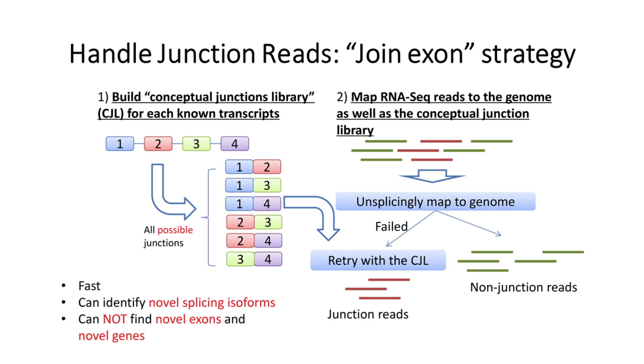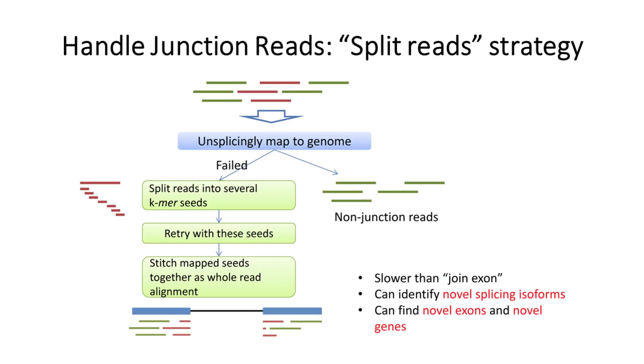Non-junction reads are mapped to the genome in an unspliced way, similar to those DNA reads. For those junction reads that cannot be mapped directly, we align them to the junction library constructed in the first step. In fact, the join exon strategy serves as a patch for the previous DNA reads mapping algorithm. This strategy can discover new splicing isoforms by constructing all possible junction libraries. However, it can do nothing for unknown exons.